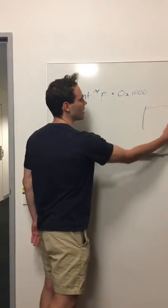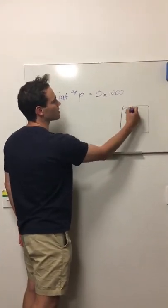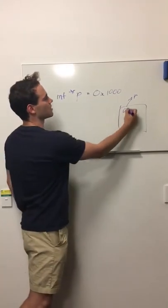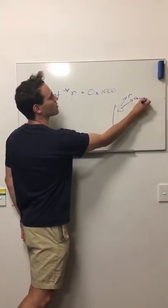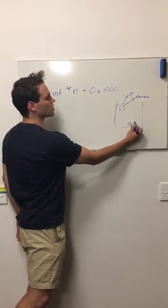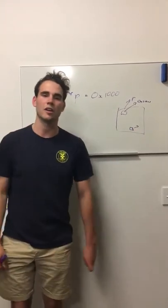If this is our memory, this is our pointer p just here, contains the value 0x1000, and this address might be located over here, which is our variable located at that address.